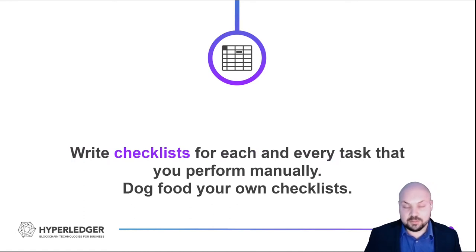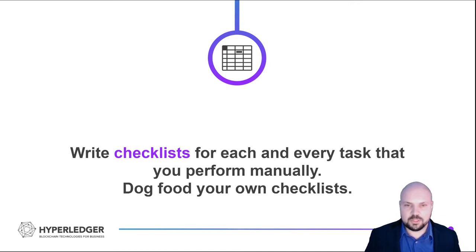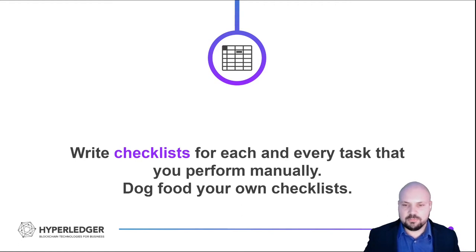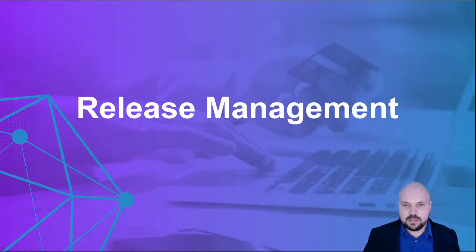Try to reduce the bus factor — write as many checklists as possible, especially if you are a lone maintainer. If you're a lone maintainer, you should also be trying your best to find more maintainers. Regardless, checklists are the way to go for any manual task that is not yet automated. You should follow the steps on the checklist when performing manual chores and update the checklists if they become outdated or if you realize you missed one or two steps.